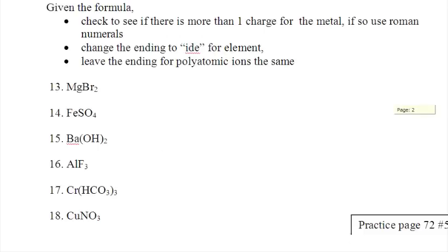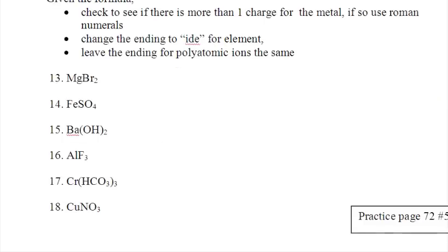So to name these things, it's pretty easy. You don't need charges. You just need to know the names and you change the ending from whatever it is on the periodic table to ide. And if it's polyatomic, you just don't change the ending at all. So MgBr2. Mg is magnesium. And Br is bromine. So you change it to ide. Bromide.